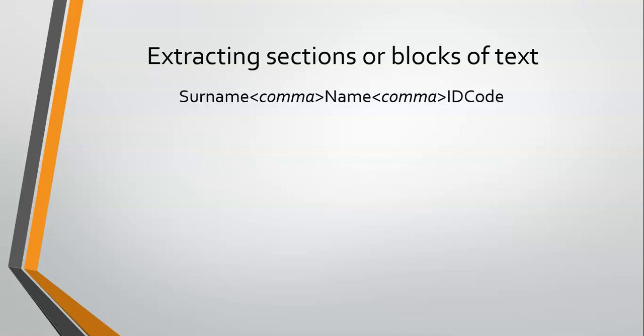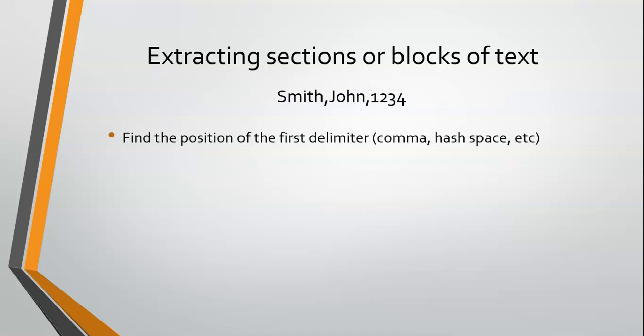It doesn't have to necessarily be a comma — you could have different types of delimiters. You could have hashes, dollars, or spaces. In our English language, we use spaces to indicate the end of a word. So, with this example where we've got Smith comma John comma some sort of code number, the first thing we need to do is find the position of that delimiter — the first comma specifically. We don't want to find the second; we want to find the first comma.